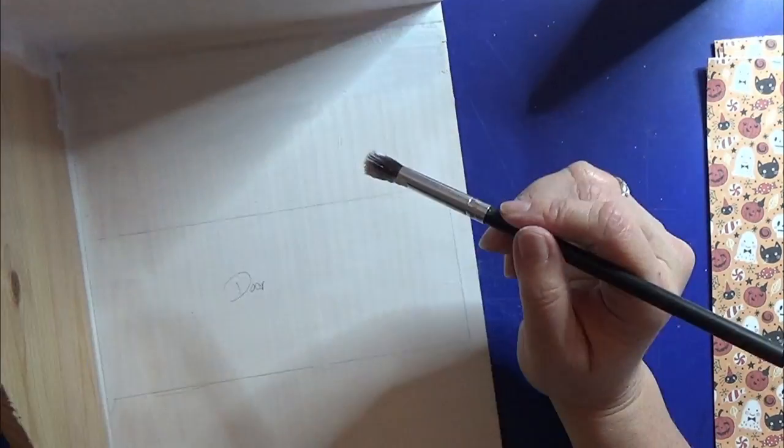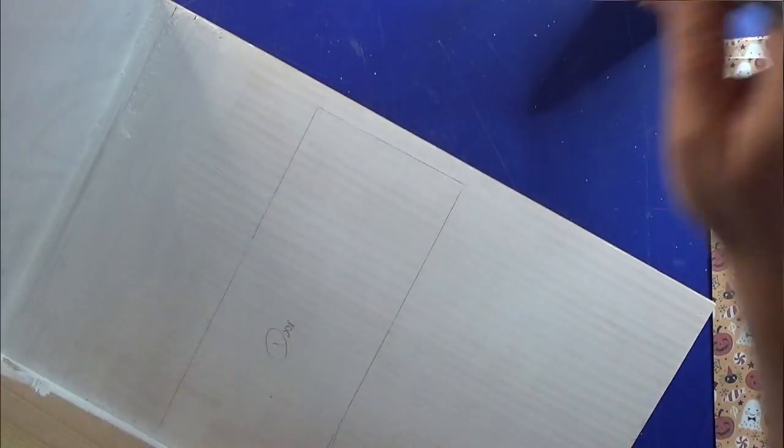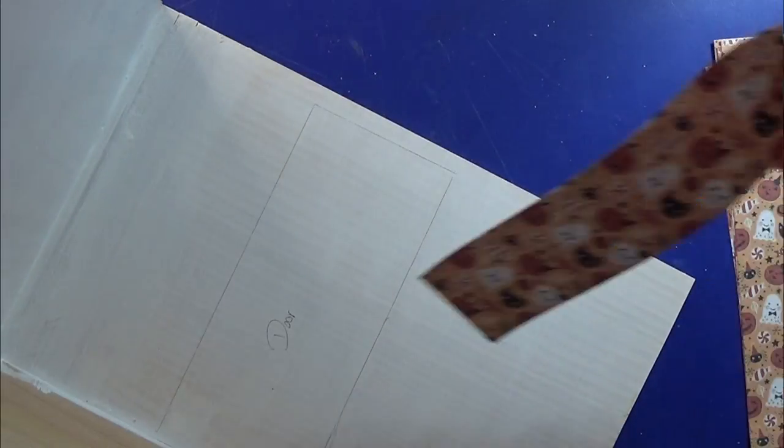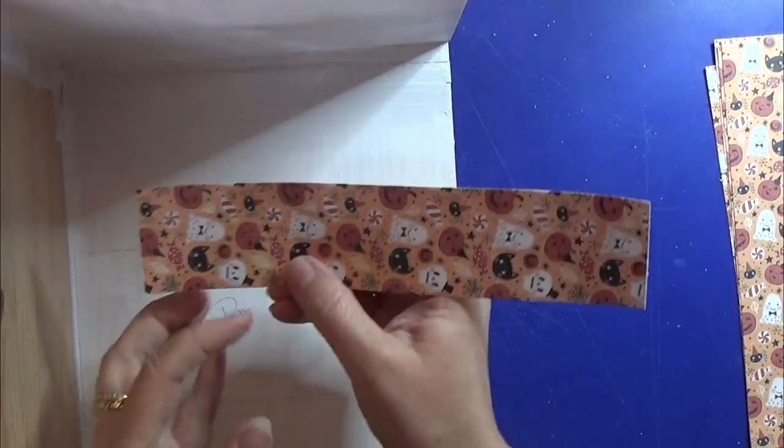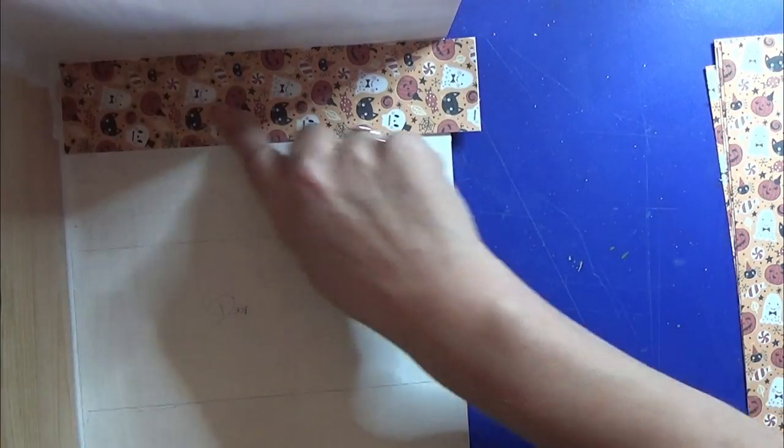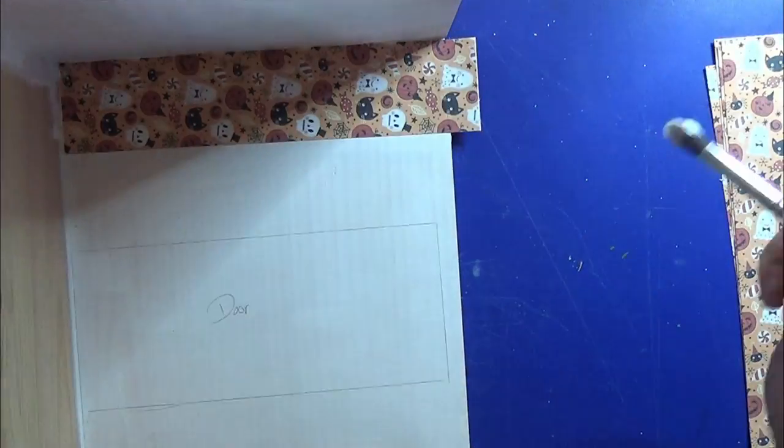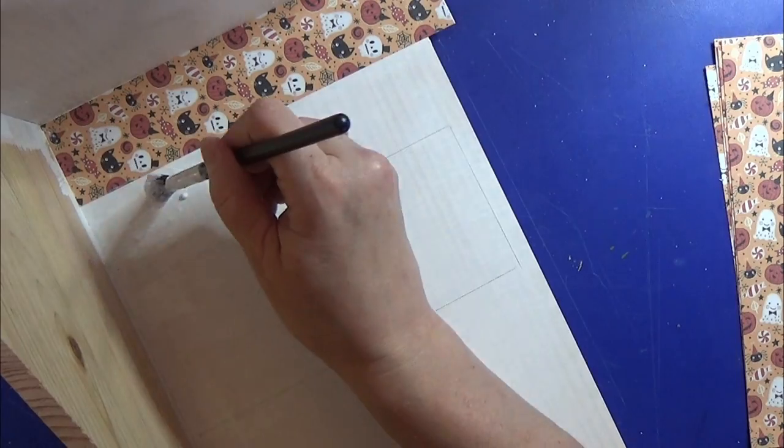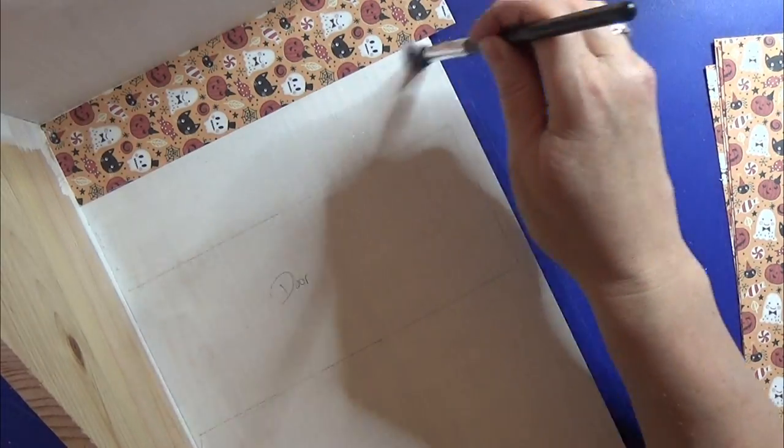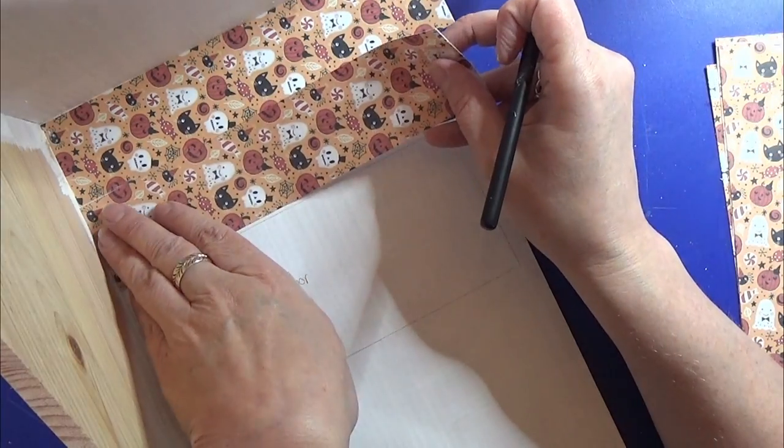Then I used some decoupage glue for gluing on the wallpaper. I'm just using it as a glue, I'm not going over the wallpaper. I used a fixative on the wallpaper before I started gluing it on so that the print on the paper would not smear if it got in touch with the glue. I always do that.